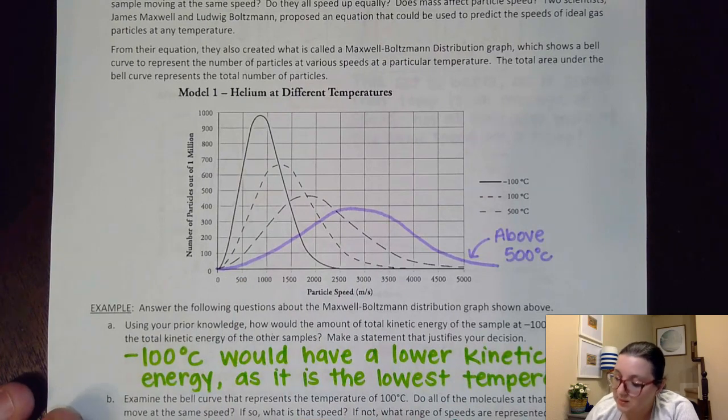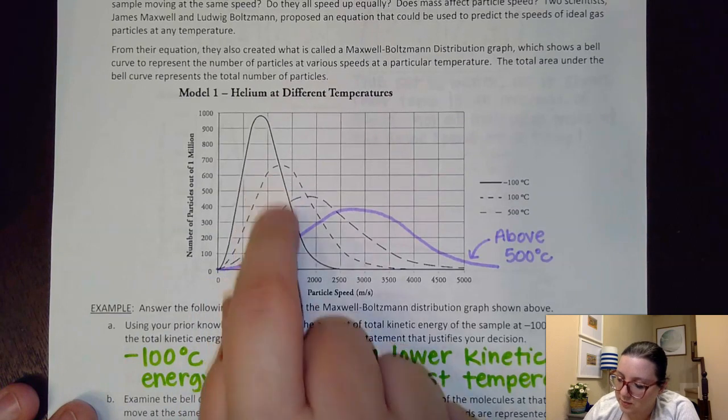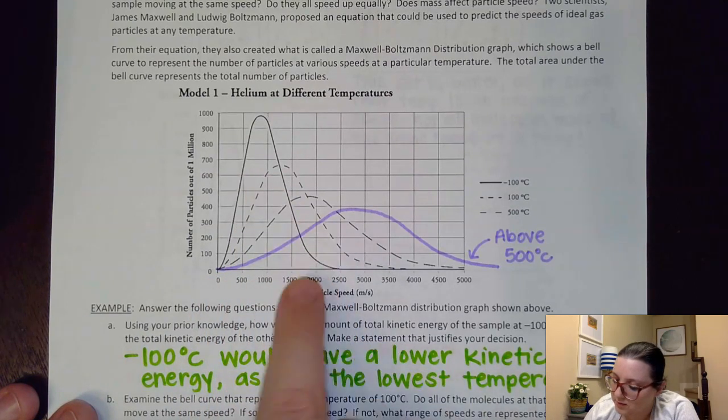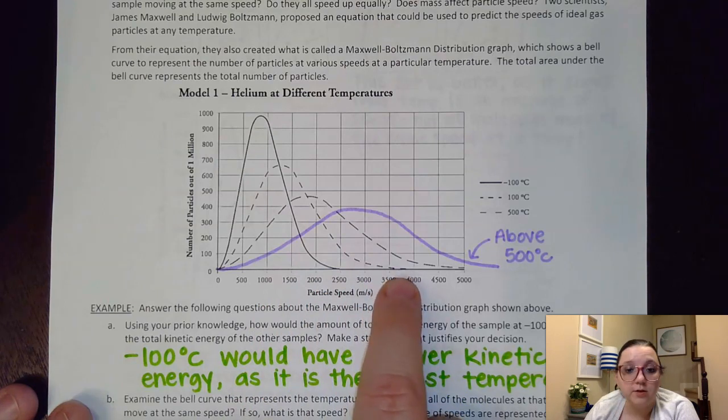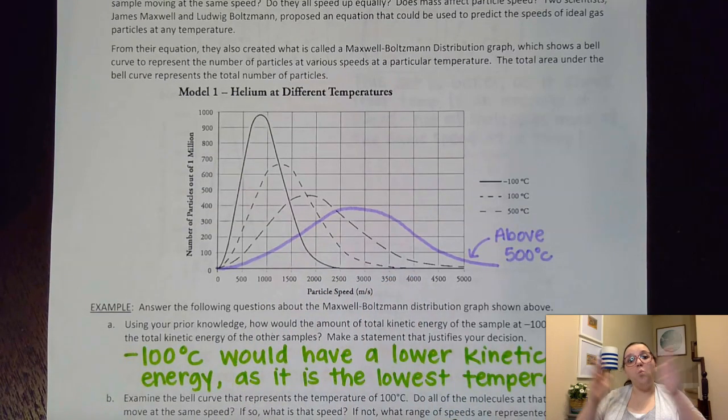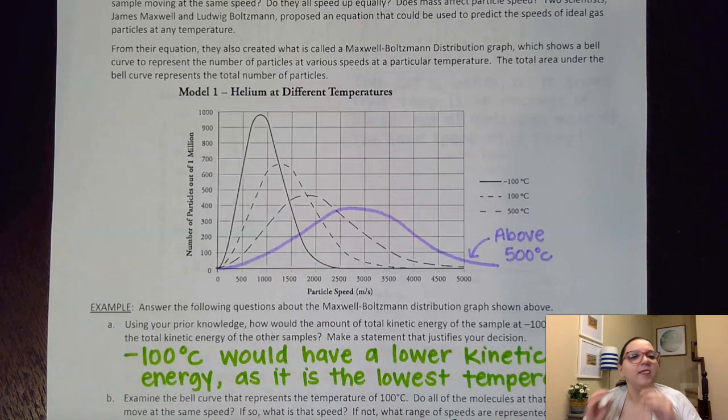And I see that there's some molecules moving at zero, there's some moving at a thousand, there's some moving at two thousand, and I even have some up here moving at like 3,500 and maybe even a little bit more. So I see a wide range of speeds there of speeds occurring for the particles at 100 degrees Celsius. They are not all moving at the same speed. If they were I would see more of a bar graph situation versus that bell curve distribution.